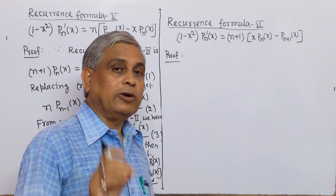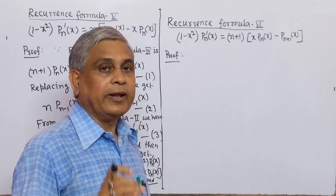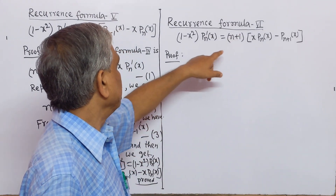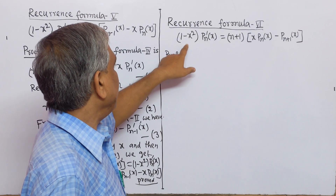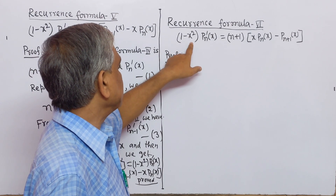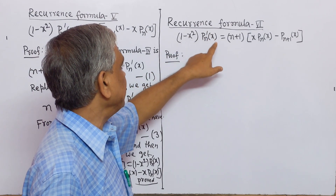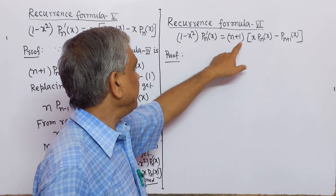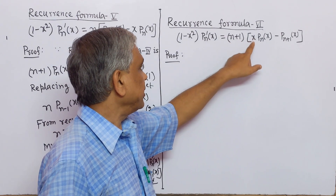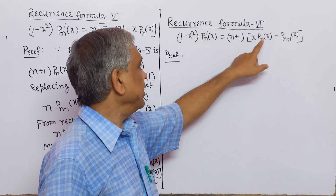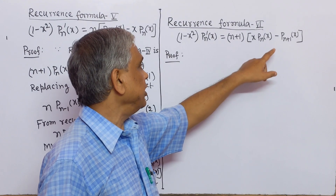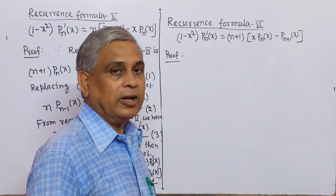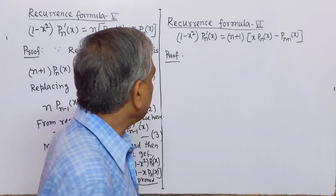Now we derive recurrence formula 6, which states: (1 - x²) P_n'(x) = (n+1) [x P_n(x) - P_{n+1}(x)]. Now we prove this.